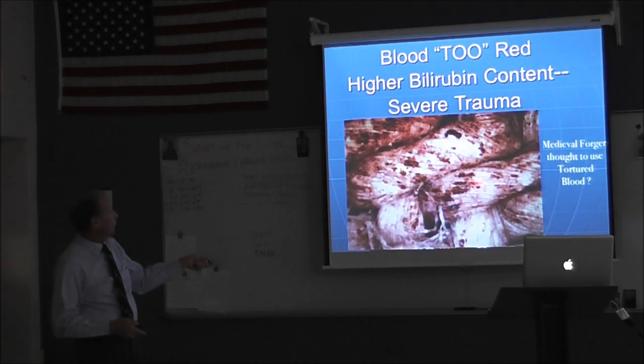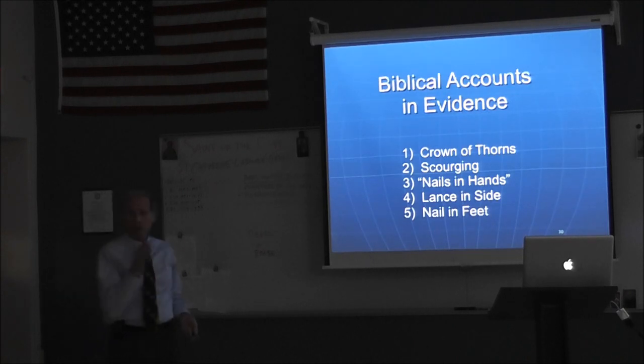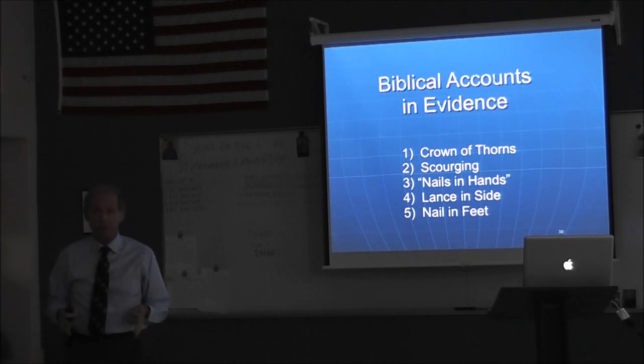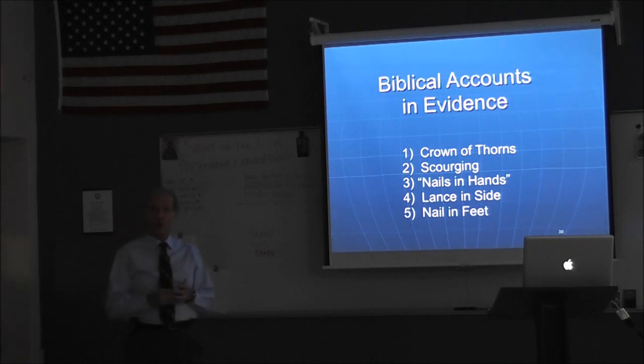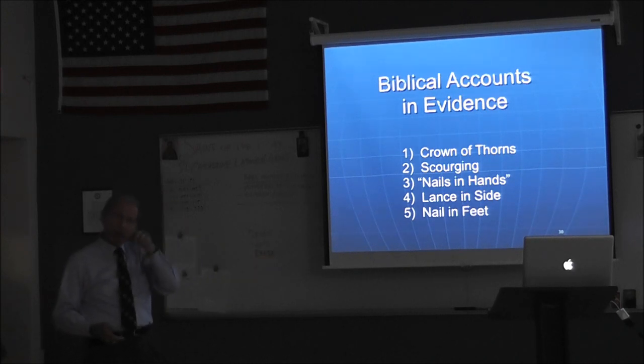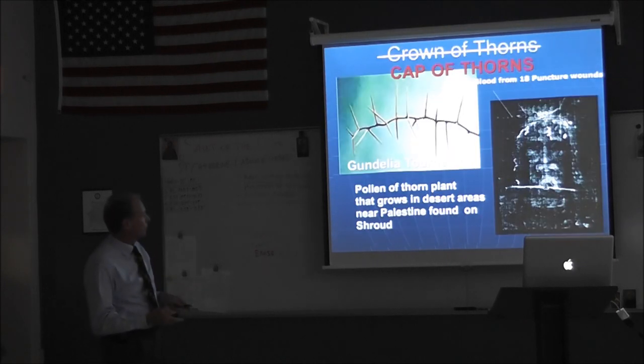All right. Now, this is a close-up of the blood. You can see it's very red, and it has more bilirubin in it to explain that. All right. Now, the biblical accounts. This is what's uncanny. Again, on the shroud are the biblical accounts of the torture of the man of the shroud. All right? But the medieval forger would have had to disagree with what the Church believed. All right? And you're going to see how the paintings in the churches, the crucifix in the churches, all the things that the Church embraced were not right. They were not accurate scientifically. And I'm going to show you what the shroud shows, how those images were later, while they're not even being corrected. But this is what the shroud shows.